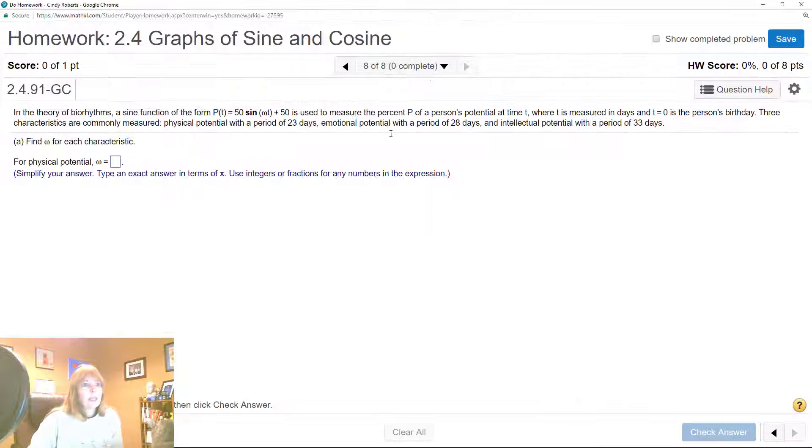Okay, so I get this question a lot and in fact you'll see I ask you to do something with it. This is talking about biorhythms and you're given this sine function that measures potential time. T equals zero is the day you were born. Three characteristics that are commonly measured are your physical potential when you're strong, emotional, and intellectual.